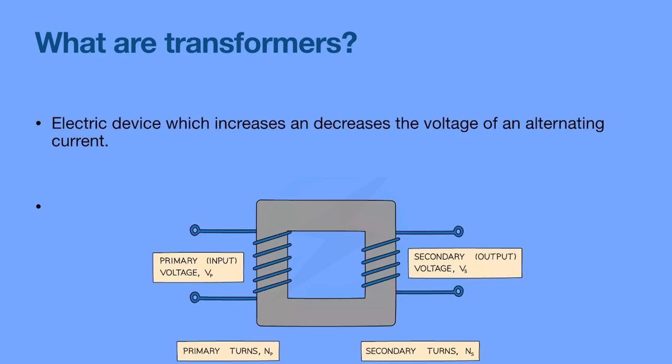So what are transformers? A transformer is an electric device which increases or decreases the voltage of an alternating current. It does not do anything to a DC current — it only changes the voltage of an alternating current.